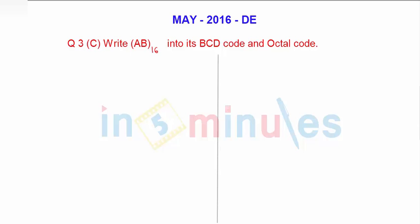The question number 3c asks to convert a number AB which is a hexadecimal number into binary coded decimal and octal.